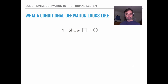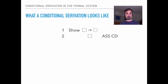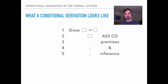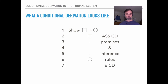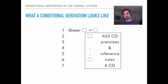In general, a conditional derivation looks like this: you're trying to show a conditional; on the next line you make an assumption for conditional derivation, which is the antecedent of whatever you're trying to show. Then you put in the premises and apply inference rules, which will eventually get you to the consequent. At that point you say 'CD' and box and cancel to finish the derivation.